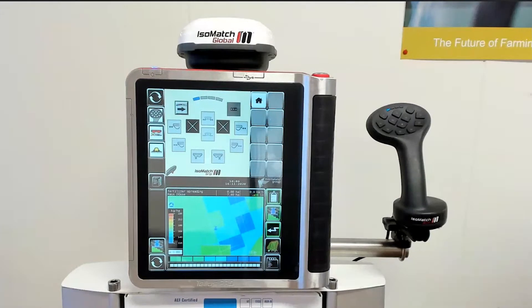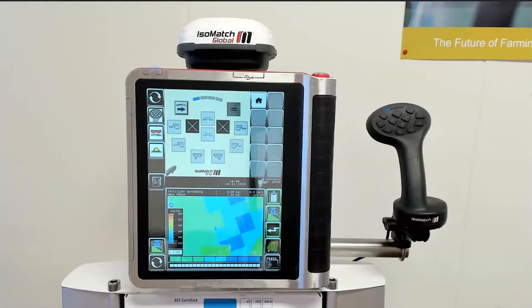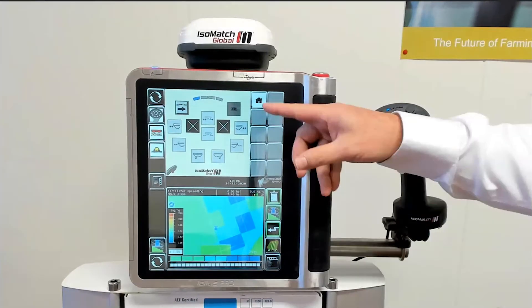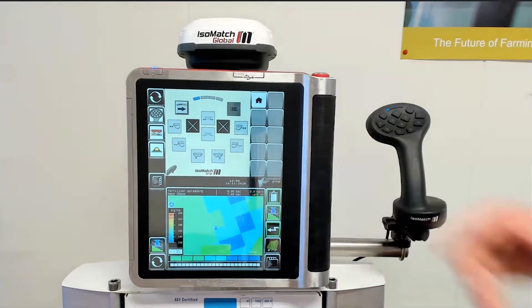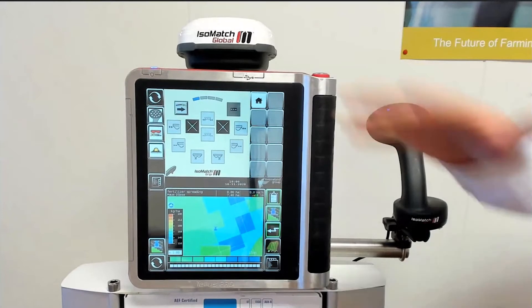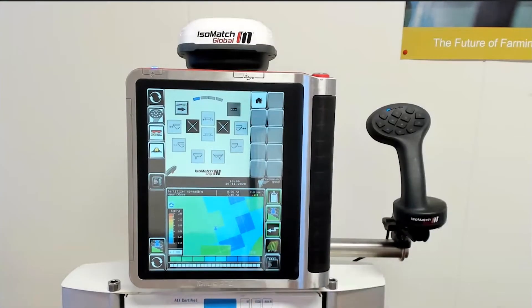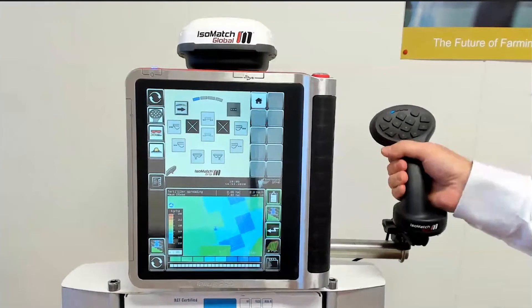When driving on a bumpy field, a mistake by pushing the wrong button on a touchscreen is easily made as you push the button above, below or next to the original desired button due to the movements of the tractor in the field. This is where the grip takes over.